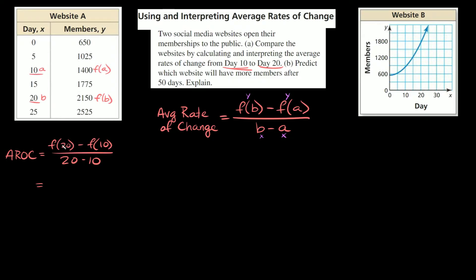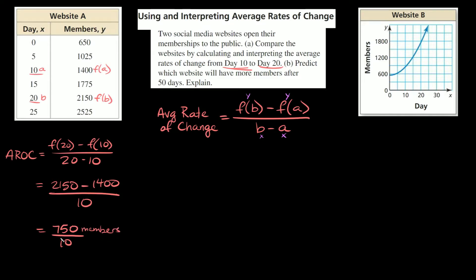So F of 20 — what's our Y value at day 20? F of 20 is 2150. Minus F of 10 — what's our Y value on the 10th day? That's 1400. So 1400, all over 20 minus 10 is 10. So 2150 minus 1400 equals 750, and that's over 10. Our Y values are members and our X values are days, so we have members per day. 750 divided by 10 equals 75, so this is equal to 75 members per day.